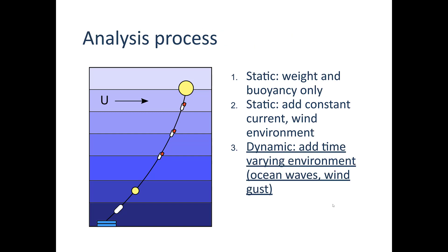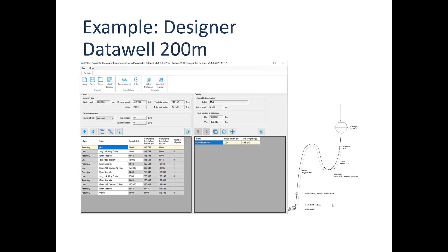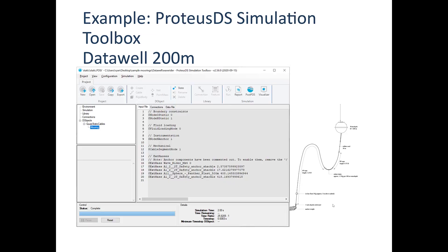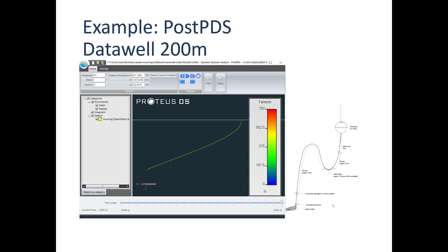For subsurface moorings, if they're far enough from the surface, the dynamic effect may not be a big problem — but the closer you get to the surface, the more of a problem it will be. Here's an example of a DataWell wave buoy mooring, one of the sample cases you can download from our website. It's a fairly straightforward mooring adjustable for different water depths — the software is not just for complex moorings. This is a snapshot of Proteus DS Simulation Toolbox completing a simulation of what happens to the system in a static current configuration, with the mooring deflection and load shown using the PostPDS visualizer.